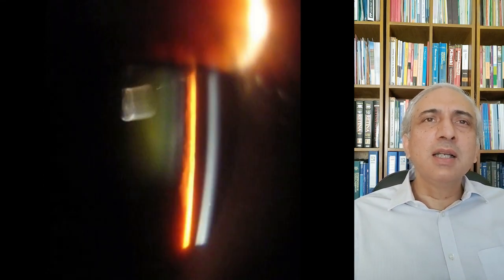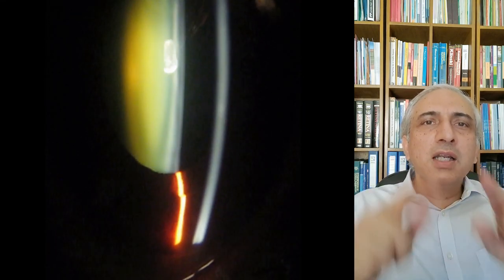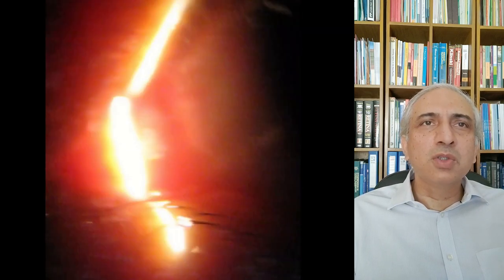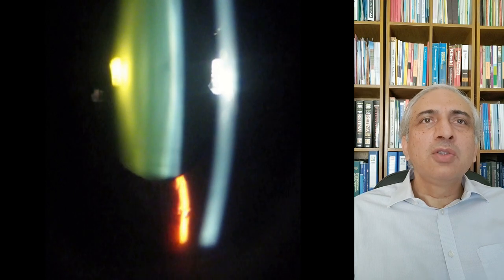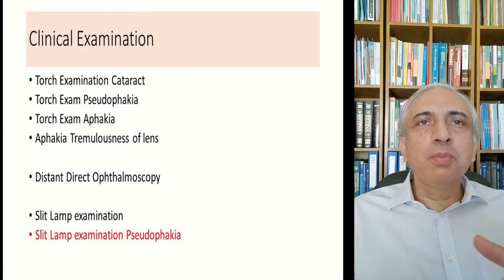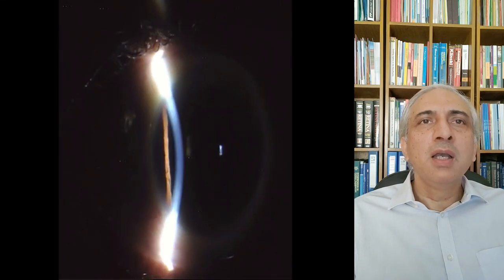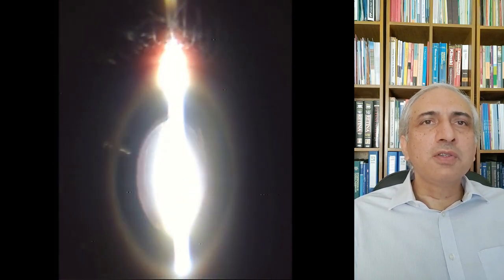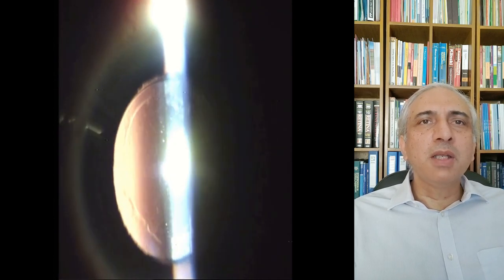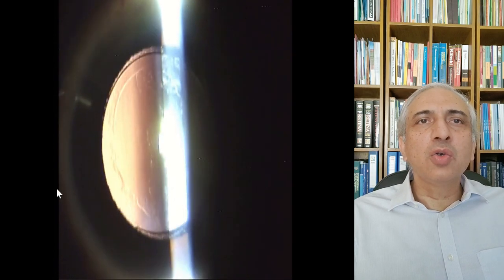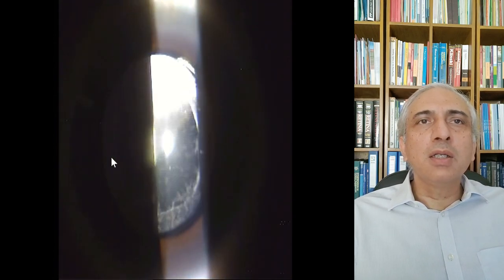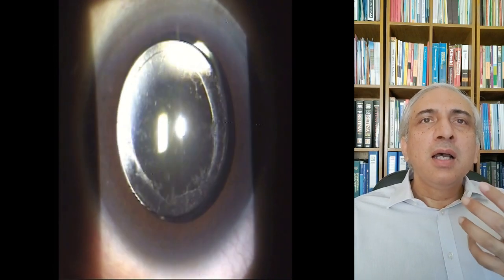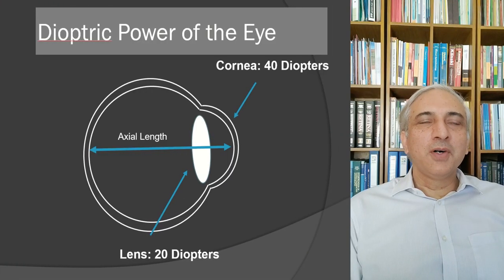On slit lamp examination, the greenish area in the center — resembling a fruit seed — represents nuclear sclerosis in nuclear sclerotic cataract. In pseudophakia, the anterior chamber is deep with reflection from the intraocular lens surface. Red reflex examination reveals the lens in position, and you can see the posterior capsule, the capsulorhexis edge, and the lens optic placed in the bag.